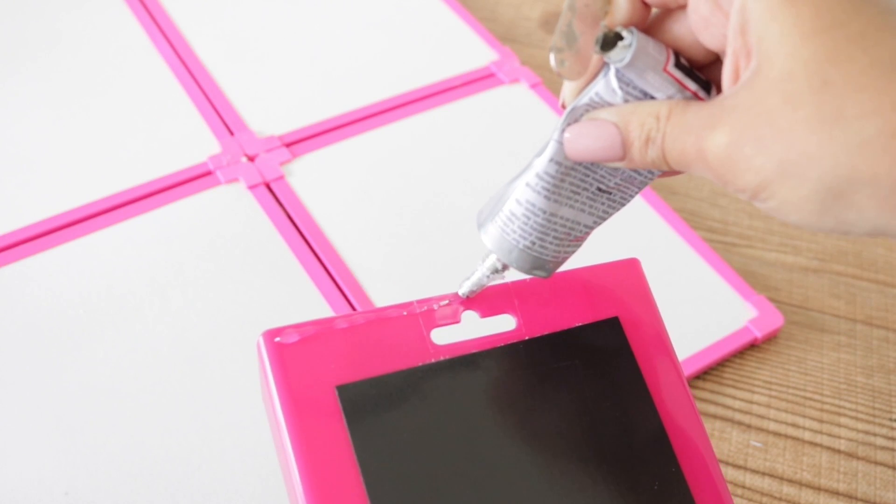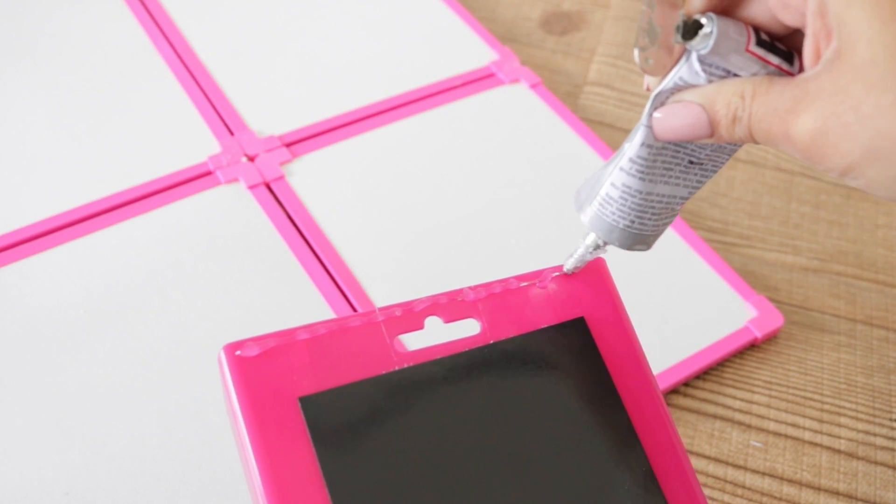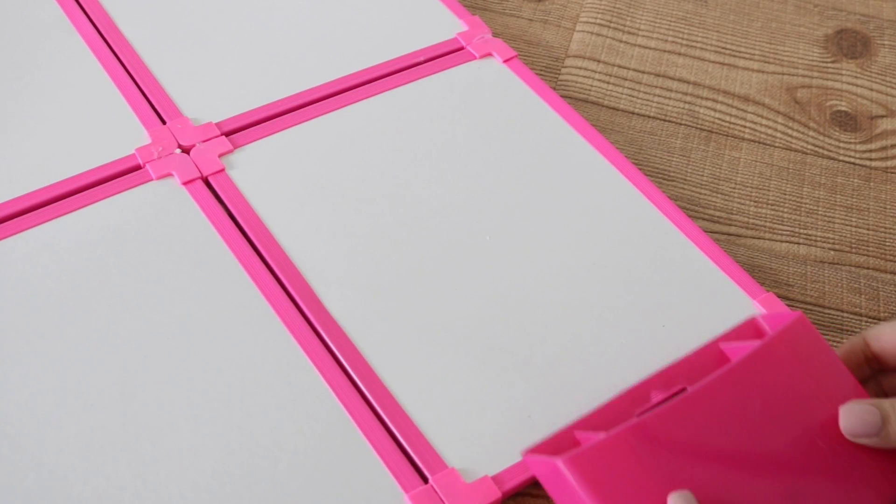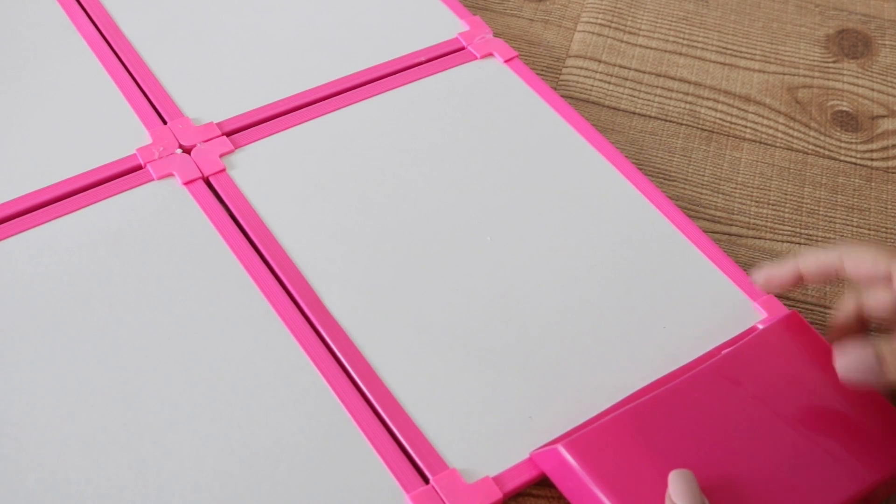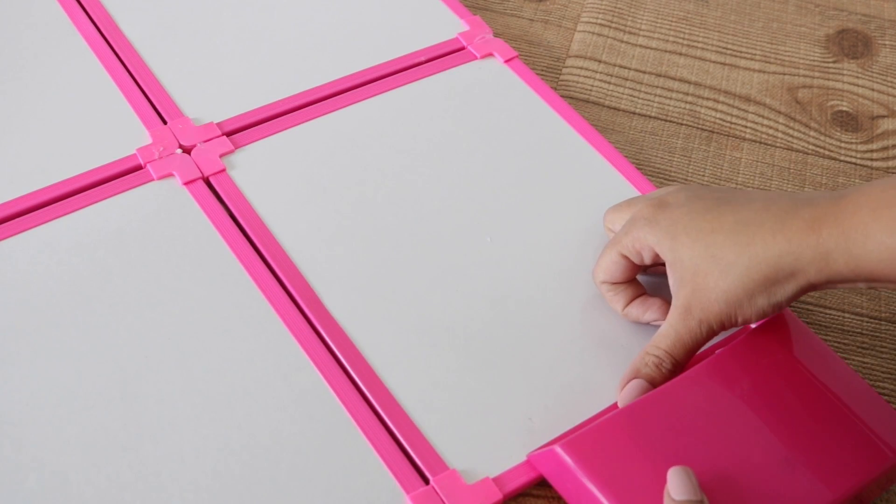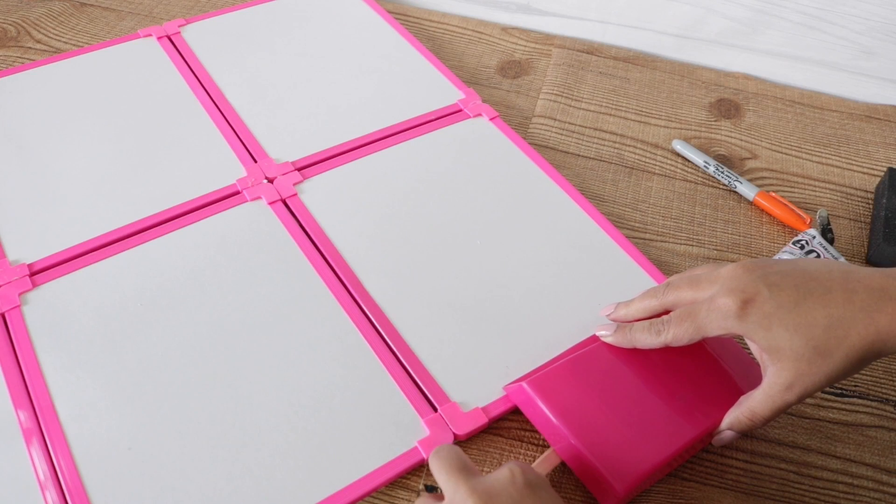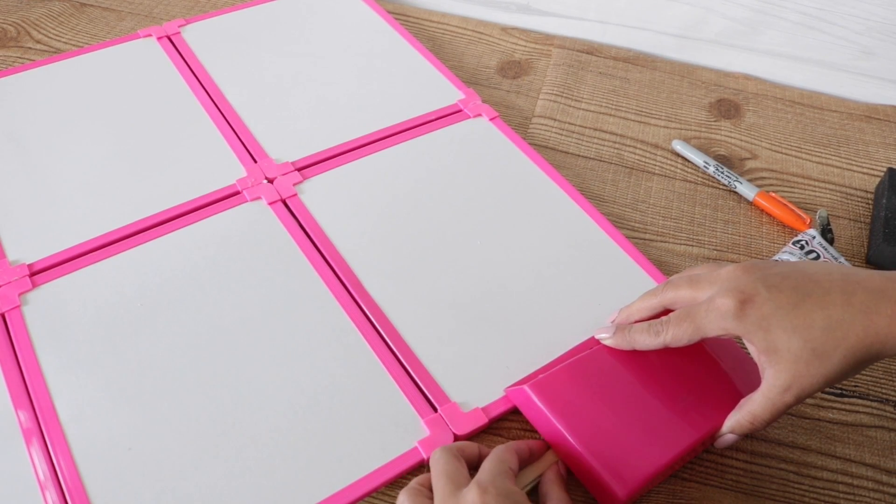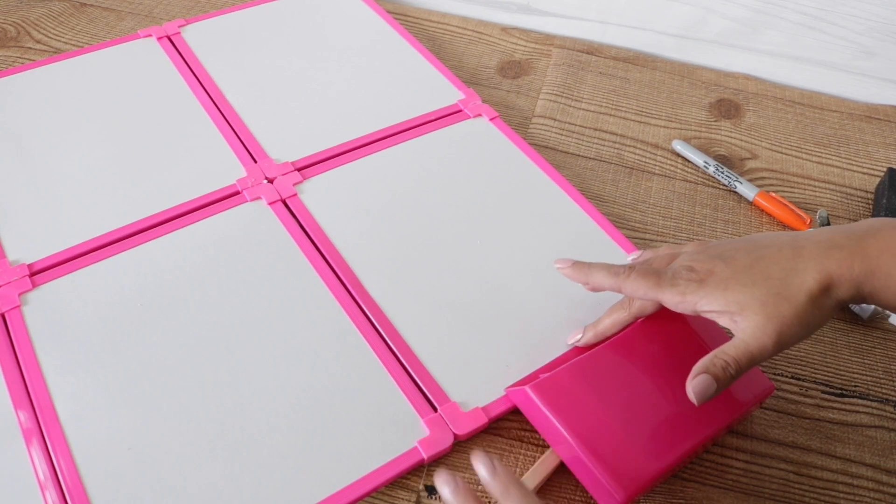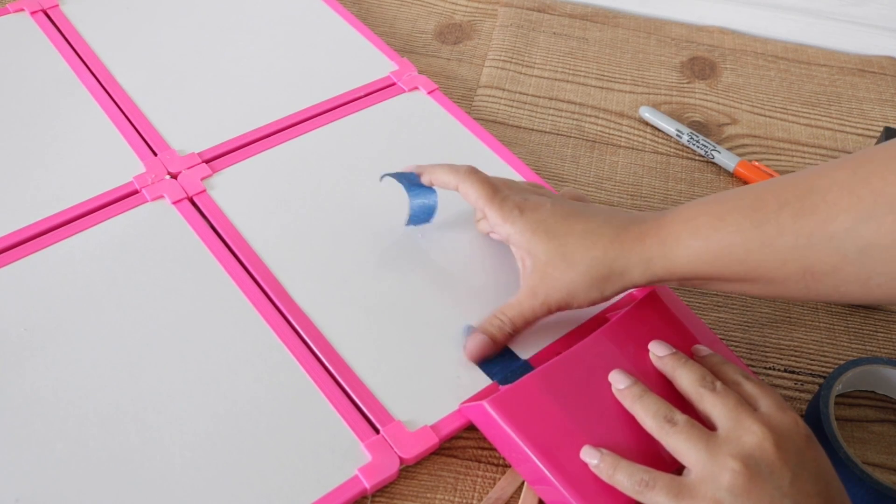I'm just going to add a very thin but generous line of E6000 at the very top, and then I'm going to go ahead and position that at the bottom right frame. You can of course add yours wherever you'd like, but I had to add some popsicle sticks at the bottom so it didn't slouch forward, and I also added some painters tape just to hold it in place while the E6000 dried.